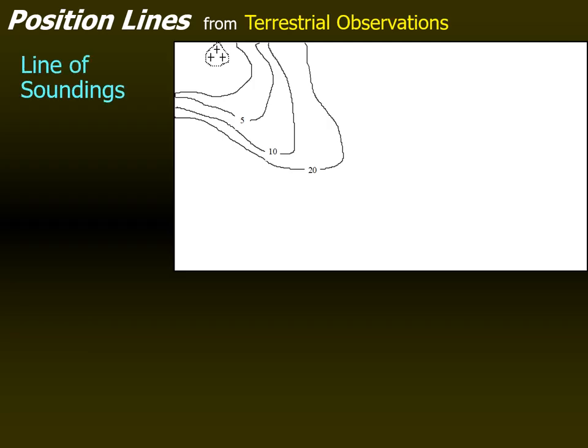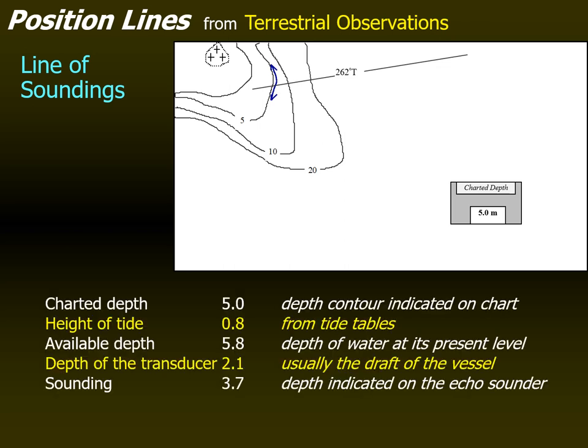As soon as you see that reading, you can derive some kind of position line providing an indication of where the ship is. This method is especially useful when the availability of other terrestrial objects for position fixing is scarce.